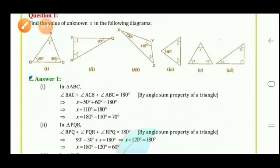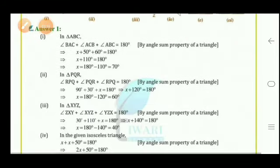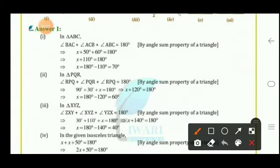Part 4 — two unknown angles are both x, and the third angle is 50°. Using angle sum property: x + x + 50 = 180, so 2x + 50 = 180, giving 2x = 130, therefore x = 65°. Both unknown angles are 65° each.